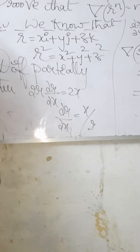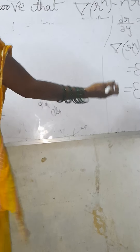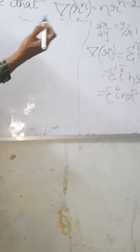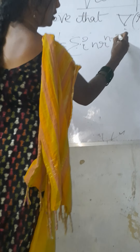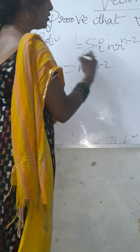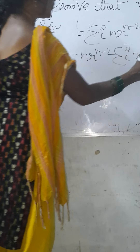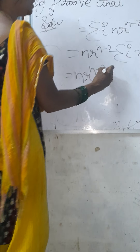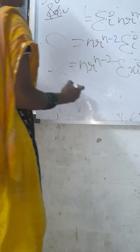Moving this term, we write n r power n minus 2 before sigma, giving sigma i bar times n r power n minus 2 into x. Removing n r power n minus 2 before sigma, we write i bar into x. That is, n r power n minus 2 times sigma xi bar.